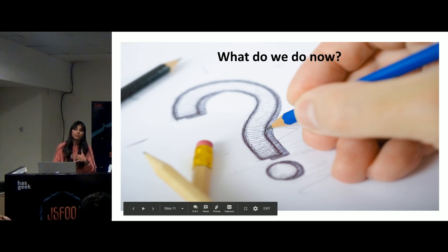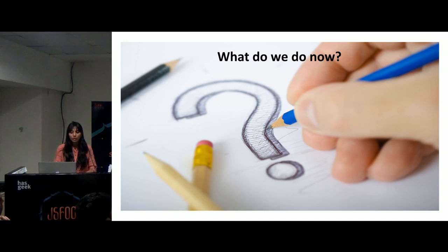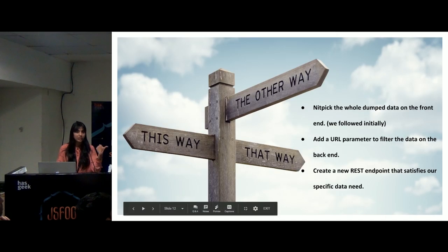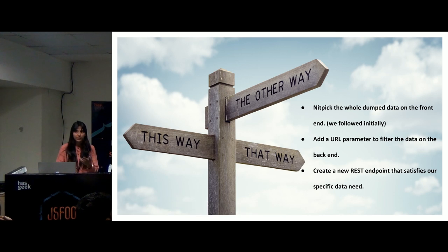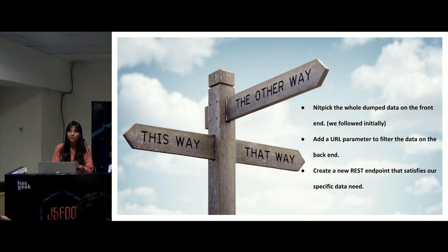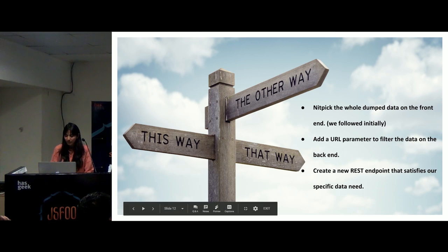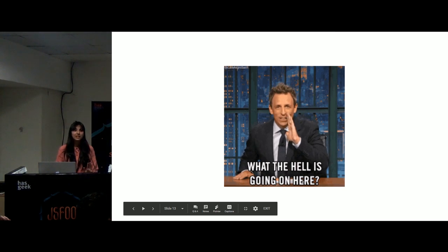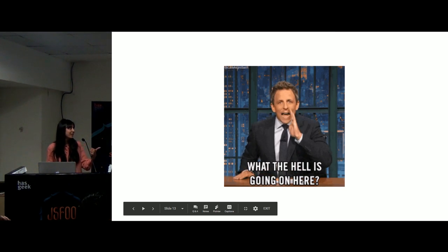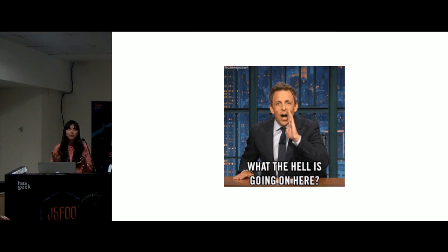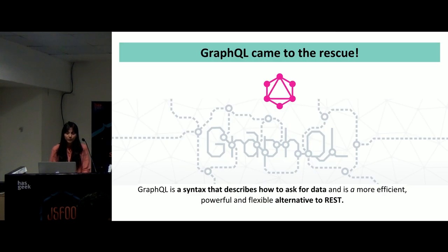So we looked for solutions. We either nitpicked the whole information dumped on the screen, which we were doing initially. The second option was to add a URL parameter to filter the data on the backend. The third was to create a new custom REST endpoint altogether, which would give exactly the data we required, but would obviously lead to an explosion of custom endpoints. By this time you must be wondering what we were going to do — even we felt we had no solution, because we had to make three roundtrips to the server and nitpick the data at the frontend.